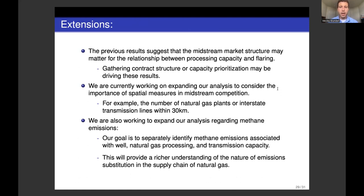We are currently working on expanding this analysis. We are looking to consider spatial measures of midstream competition — the number of natural gas plants or interstate transmission lines within 30 kilometers of a well and how that matters for well-level reported flaring. We are also expanding our methane emissions analysis to separately identify methane emissions at different points in the supply chain: at the well level, at natural gas plants, and from transmission line leakage. This will provide a richer understanding of emissions substitution in the supply chain.